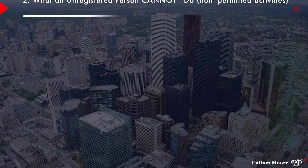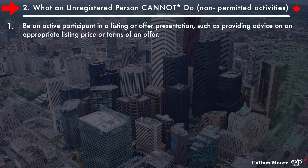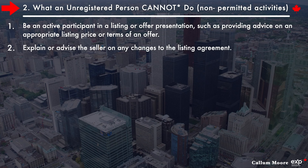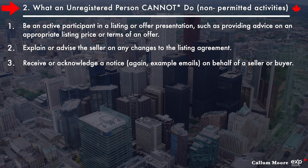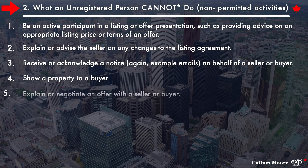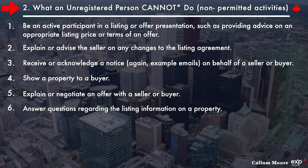Now, not permitted activities. One, be an active participant in a listing or offer presentation, such as providing advice on an appropriate listing price or terms of an offer. Two, explain or advise the seller on any changes to the listing agreement. Three, receive or acknowledge a notice — again, this would be an email, for example — on behalf of a buyer or seller. Four, show a property to a buyer. Five, explain or negotiate an offer with a seller or buyer.